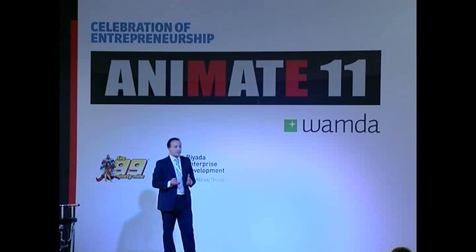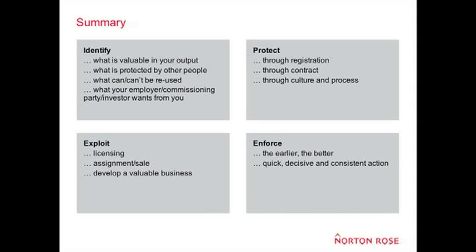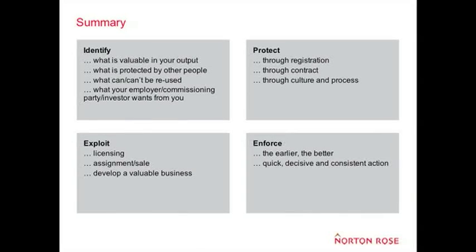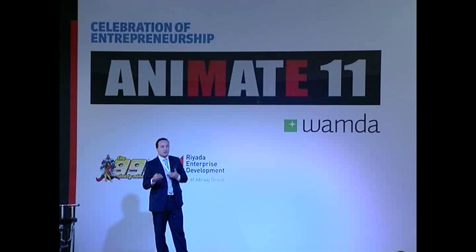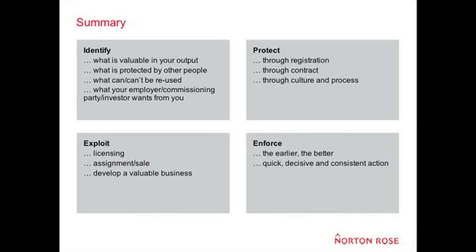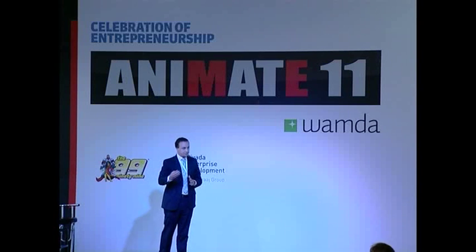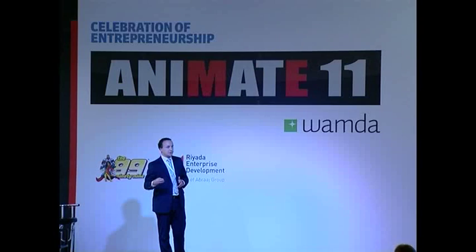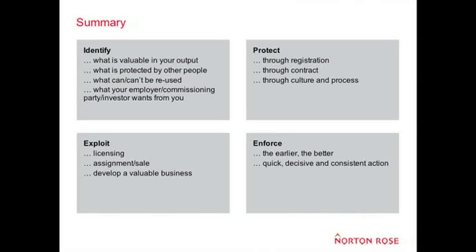To summarise, there are four key things for animators to think about. Number one: identify — work out what's valuable in what you're creating, what you can protect, and what others have protected so you don't copy their work. Number two: protect — register it, include IP clauses in employment and commission contracts, and build a culture of protection. Number three: exploit — license your IP and seek investment. Number four: enforce — take quick, decisive, and consistent action against people infringing your brands, because small issues escalate into larger ones.